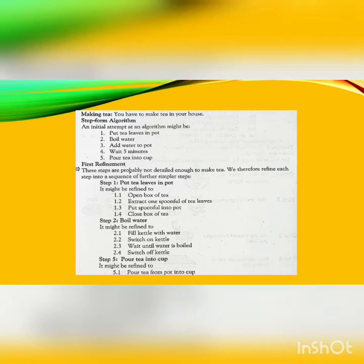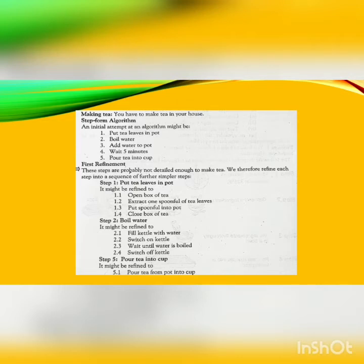Step 2, boil water, might be refined to: fill kettle with water, switch on kettle, wait until water is boiled, switch off kettle. Steps 3 and 4 are already efficient enough in the current situation. Step 5, pour tea into cup, might be refined to: pour tea from pot into cup.